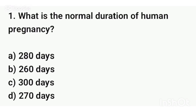Question number one. What is the normal duration of human pregnancy? The correct answer is option A: 280 days.